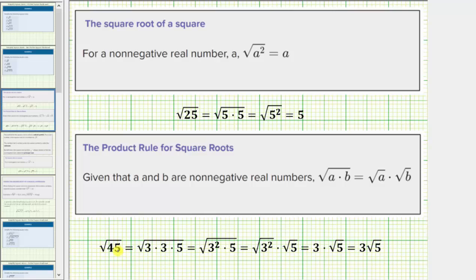If we look at the square root of forty-five, the prime factorization of forty-five is three times three times five. Because we have two factors of three, forty-five does contain a perfect square factor, and therefore this will simplify. The square root of three times three times five equals the square root of three squared times five. Using the product rule for square roots, this equals the square root of three squared times the square root of five. The square root of three squared simplifies to one factor of three, so the square root of forty-five simplifies to three square root of five.